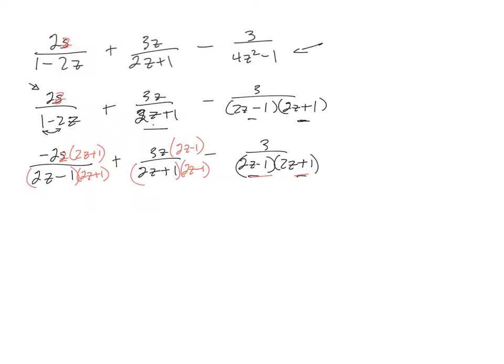So the first one, well maybe what I'll do now is just write them all over since they have a common denominator. I'll write that on the bottom. 2z minus one 2z plus one. And then on the top I'm going to foil this through. So it'll be a minus 4z squared minus 2z. And then I'll foil this through as well. So plus 6z squared minus 3z. And then on the last one, I think it's just minus 3.